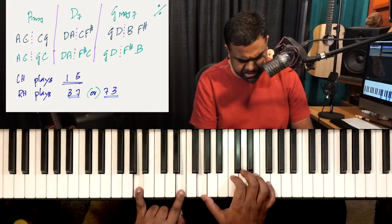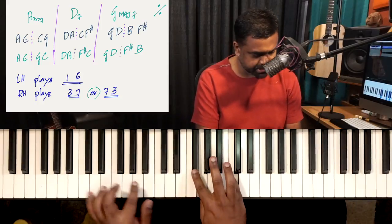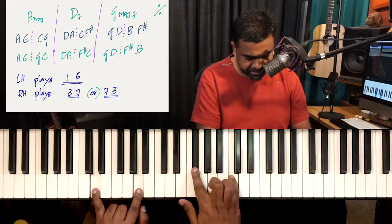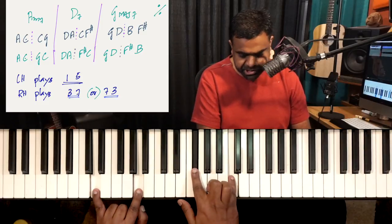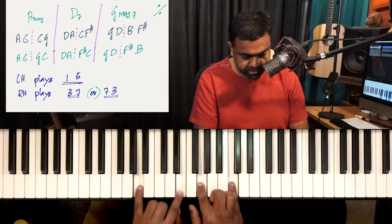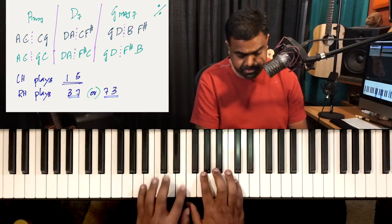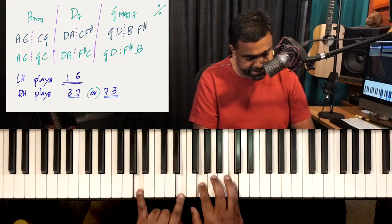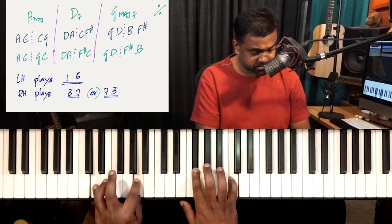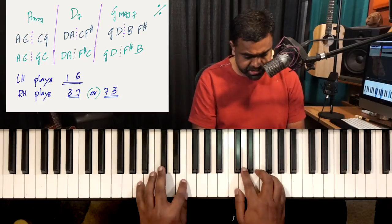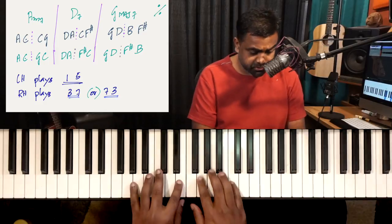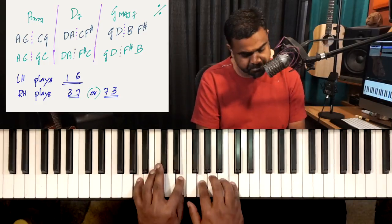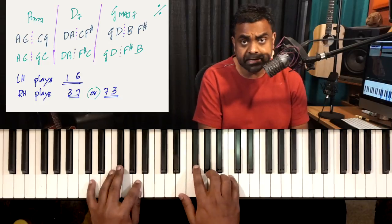So A minor 7th to D dominant 7th. Now if I played it the other way: A, E, G, C for A minor 7th — you can play it higher too, it sounds good everywhere. Then for D dominant: D, A, F sharp, C. Remember what's common between the chords? C. So: A, E, G, C — then D, A, F sharp, C. We can either go from A minor 7th to D dominant this way, or this way.